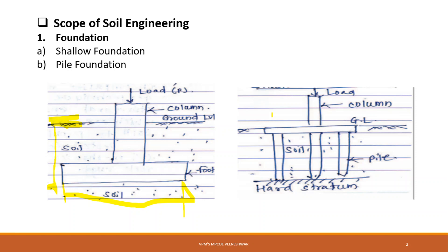Deep foundations distribute the load of the superstructure into the ground vertically rather than laterally. We will prefer deep foundation and pile foundation when the soil strata in the upper layer is very weak and loose. The piles are driven down to the hard strata, and the superstructure load is transferred to the hard strata in a vertical manner.